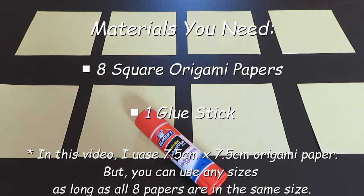The materials you need are 8 square origami papers and a glue stick. In this video, I used 7.5cm x 7.5cm origami papers, but you can use different sizes. Just make sure all 8 papers are the exactly same size.